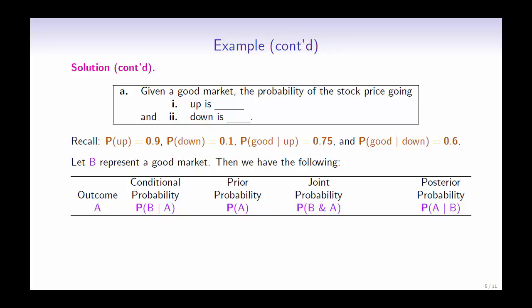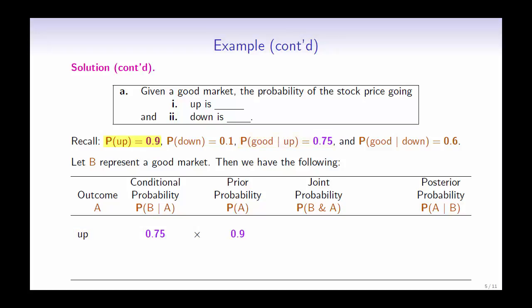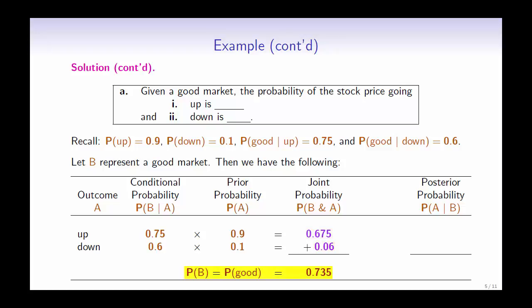For the outcome that the stock price goes up, we have the conditional probability 0.75 times the prior probability 0.9, which gives us the joint probability 0.675. For the outcome that the stock price goes down, we have the conditional probability 0.6 times the prior probability 0.1, which gives us the joint probability 0.06. Adding up the two probabilities 0.675 and 0.06, we obtain the probability of a good market, which is 0.735.